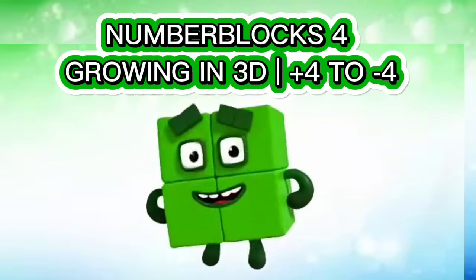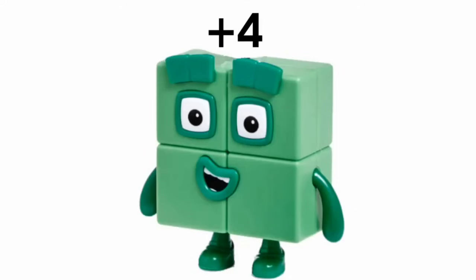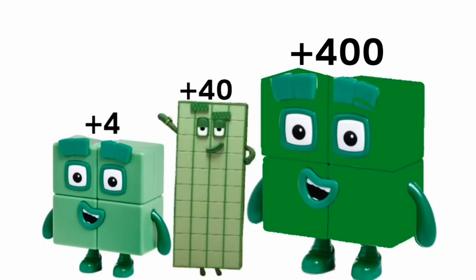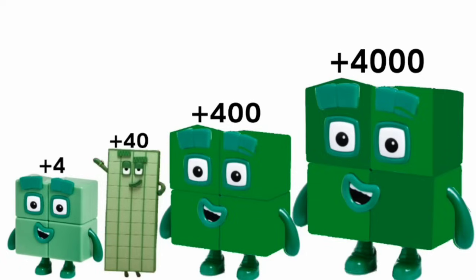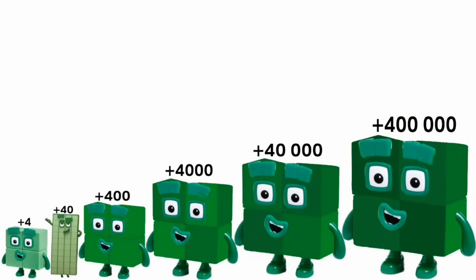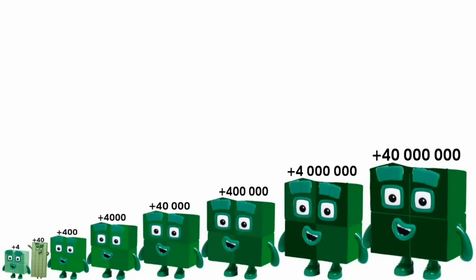Number Blocks Four going in 3D — positive four and negative four. Positive sequence: positive four, positive forty, positive four hundred, positive four thousand, positive forty thousand, positive four hundred thousand, positive 4 million, positive 40 million.